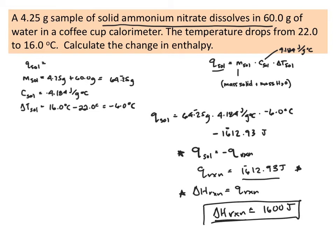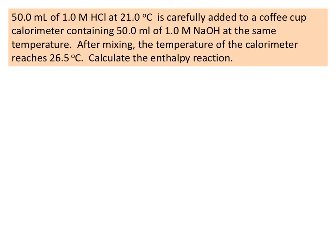In the second problem, we have 50 milliliters of 1 molar hydrochloric acid at 21°C mixed with 50 milliliters of 1 molar sodium hydroxide in a coffee cup calorimeter at the same temperature. After mixing, the calorimeter temperature rises to 26.5°C, and we need to calculate the enthalpy of the reaction. We are again solving a q of solution problem to find information about the surroundings and then use it to find information about the reaction between NaOH and HCl.